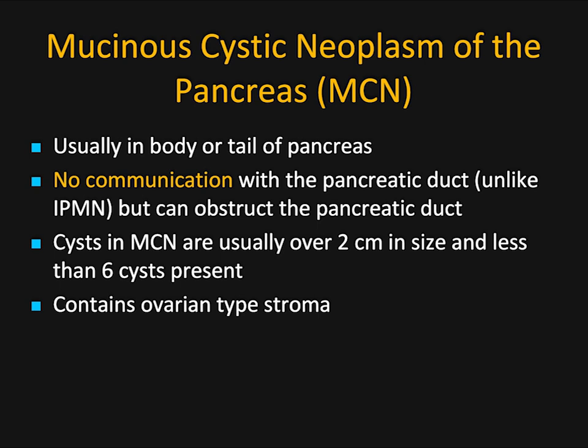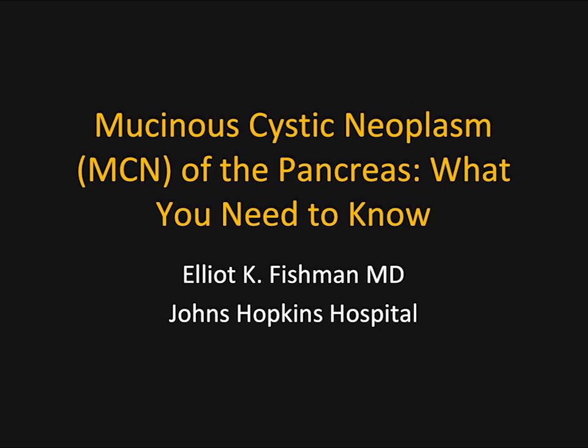Helpful points: location, lack of pancreatic duct communication. The cysts in MCN are usually 2 cm in size and fewer than 6 cysts present. And again, that ovarian-type stroma, which can be suggested by septations, but otherwise you can't tell much.